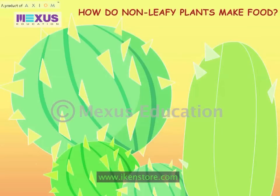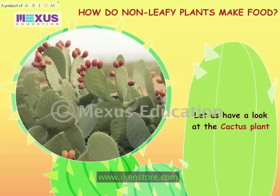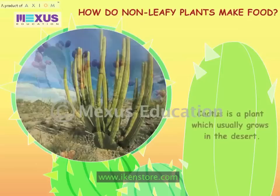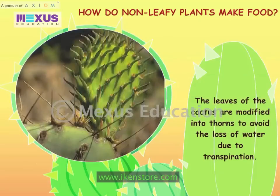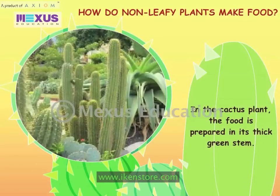How do non-leafy plants make food? Let us have a look at the cactus plant. Cactus is a plant which usually grows in the desert. The leaves of the cactus are modified into thorns to avoid the loss of water due to transpiration. In the cactus plant, the food is prepared in its thick green stem.